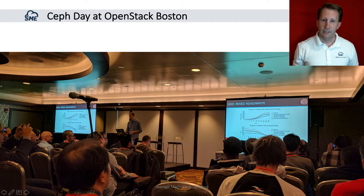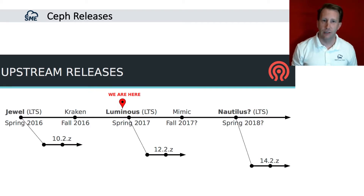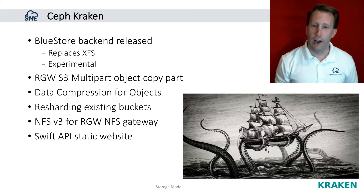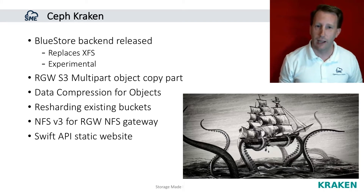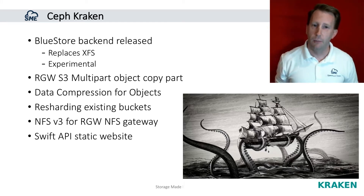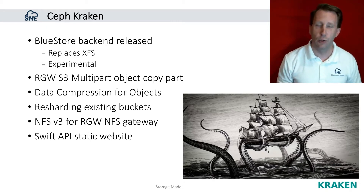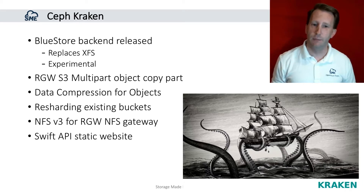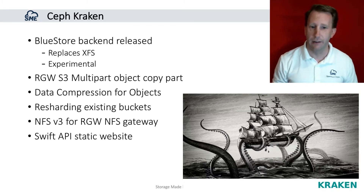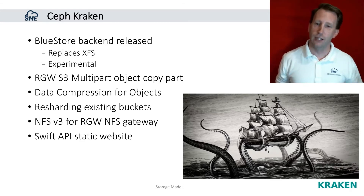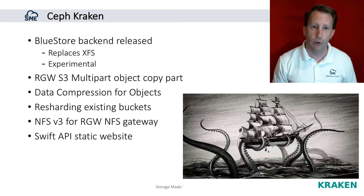Next up, Ceph Day at OpenStack Boston. Sage Weil gave a talk outlining that work had begun on Luminous, the next release and an LTS release of Ceph. However, throughout the conference, Ceph was celebrating the Kraken release. What's new in the Kraken release as related to object storage? Bluestore is a new backend released in Kraken — experimental in Kraken, but it replaces XFS. Furthermore, the S3 API has been expanded with multi-part copy object part support. Data compression for objects has been added, as well as the ability to re-shard existing buckets. Sharding of existing buckets to put a virtually limitless number of objects is a common theme between Ceph and OpenStack Swift.